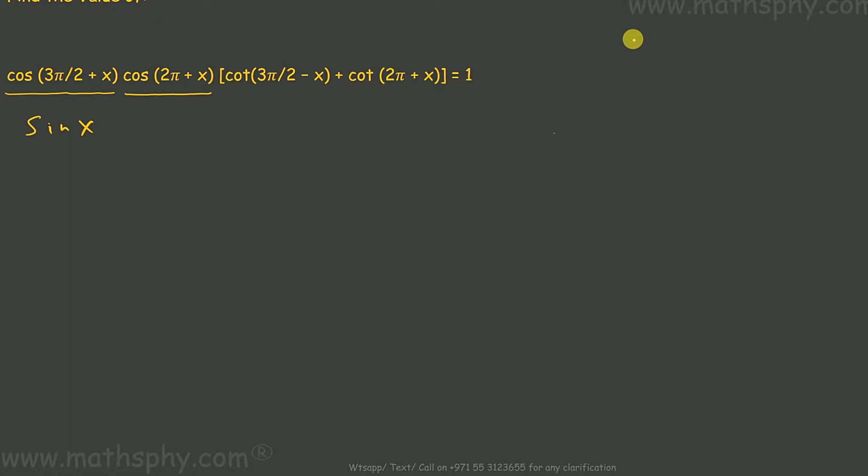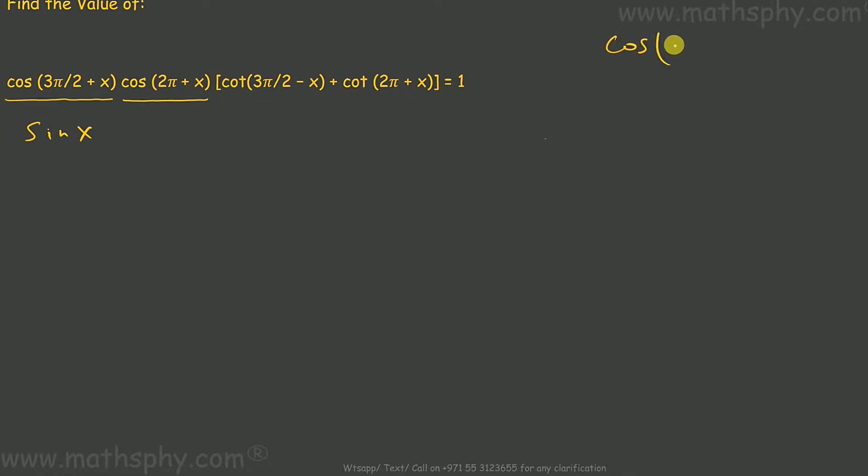This is, you know that cos(2nπ + x) equals to cos x. We know the theorem where if the value of x increases or decreases by the integral multiple of 2π, then the value of sine and cosine remains the same.